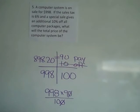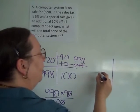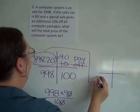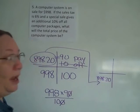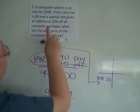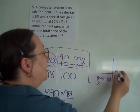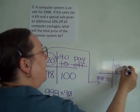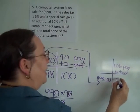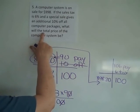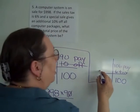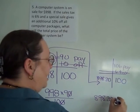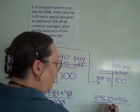Now for the second part of the problem, I set up another grid. The $998 becomes the total, and $898.20 is my sale price. Then I apply the 6% tax — remember, tax is added on to 100%, so I have 106% that I'm going to pay, and 100 stays the same. I'm looking for the final price, not just the tax amount, so I take 898.20 times 106 divided by 100.